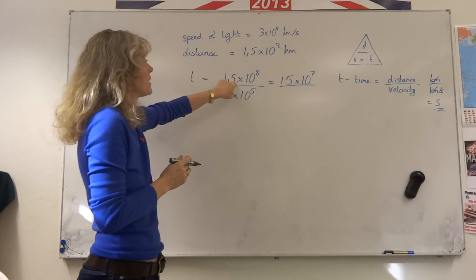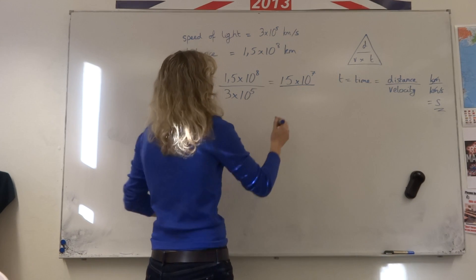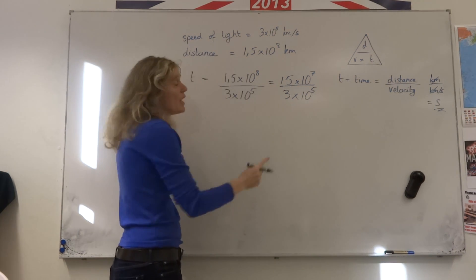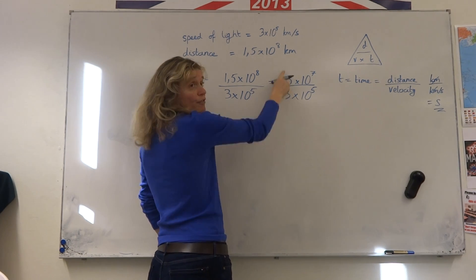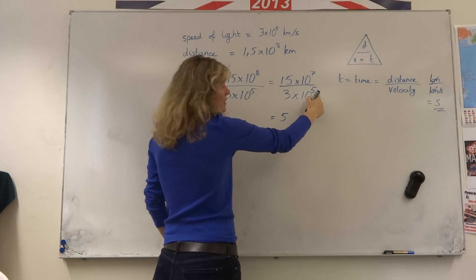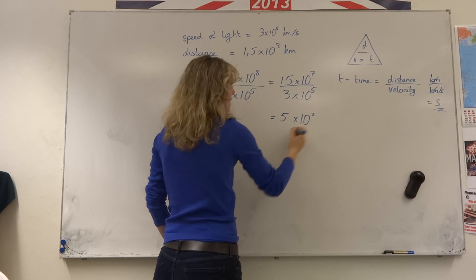Change 1.5 times 10 to the 8 into the same number, 15 times 10 to the 7, and divide by 3 times 10 to the power 5. 3 now divides perfectly into 15 five times. 10 to the 7 divided by 10 to the 5 is 10 to the 7 minus 5, which is 10 squared.